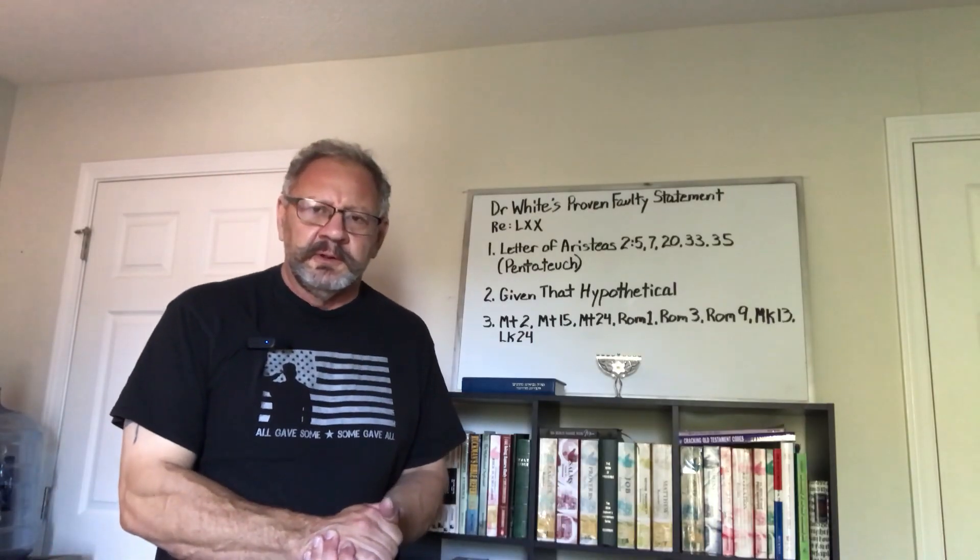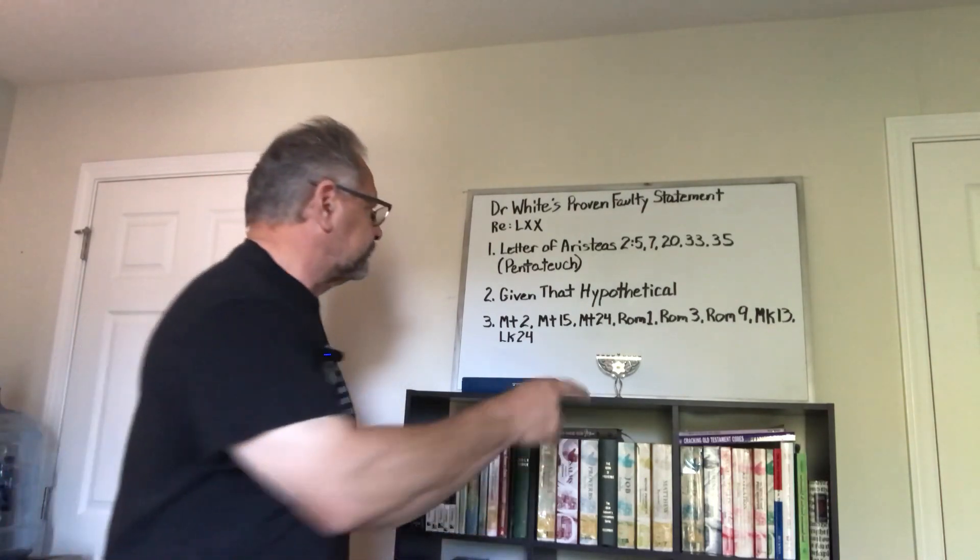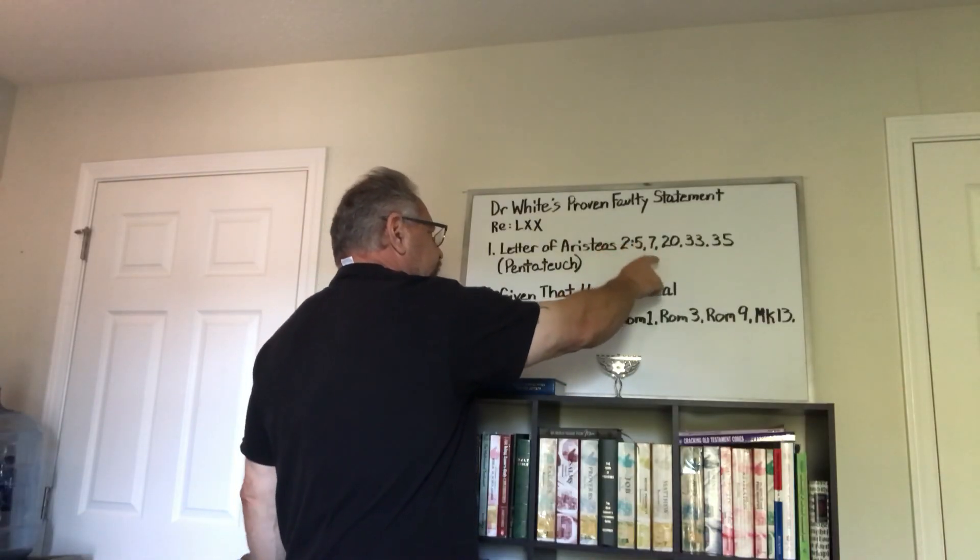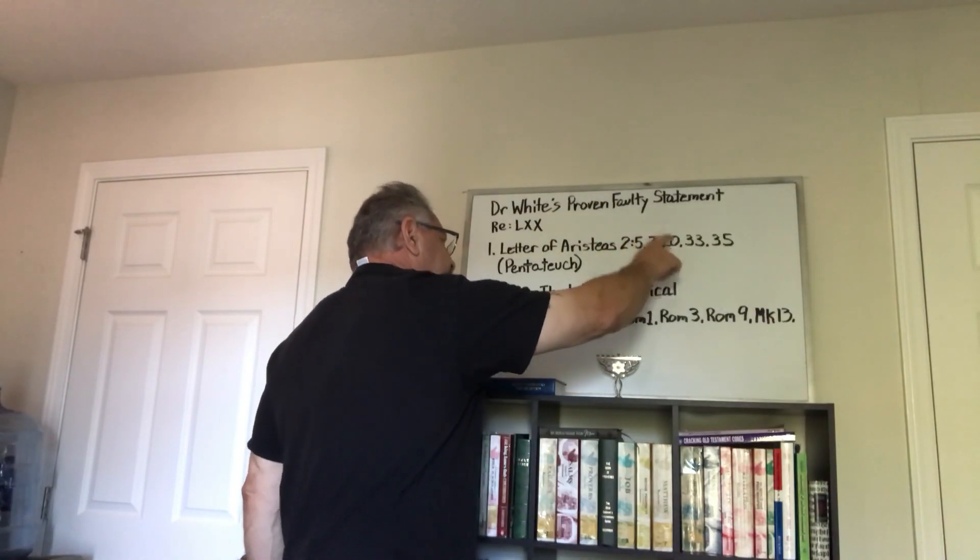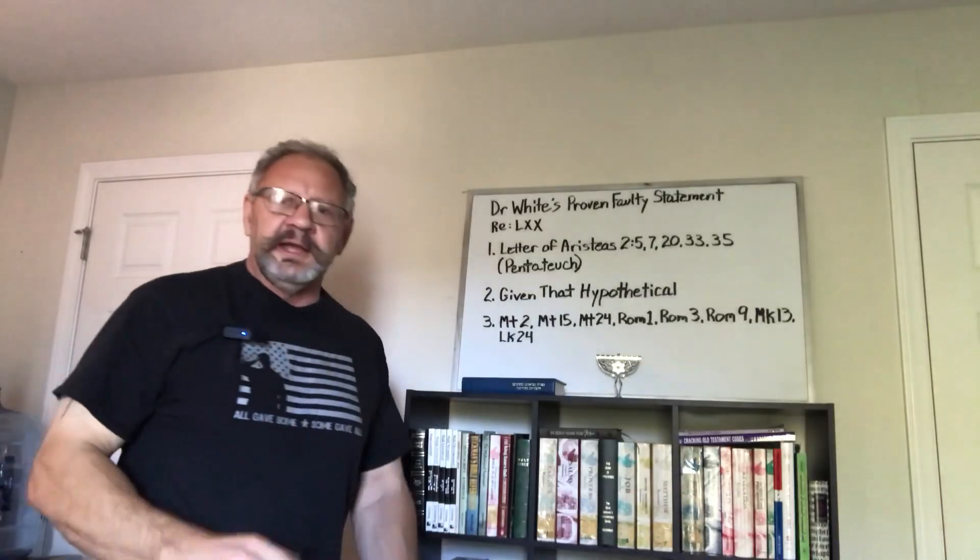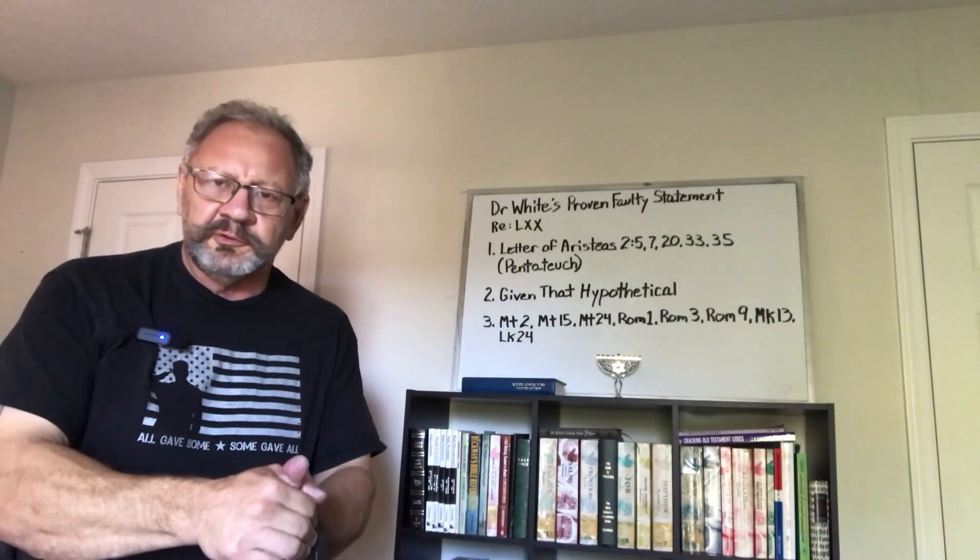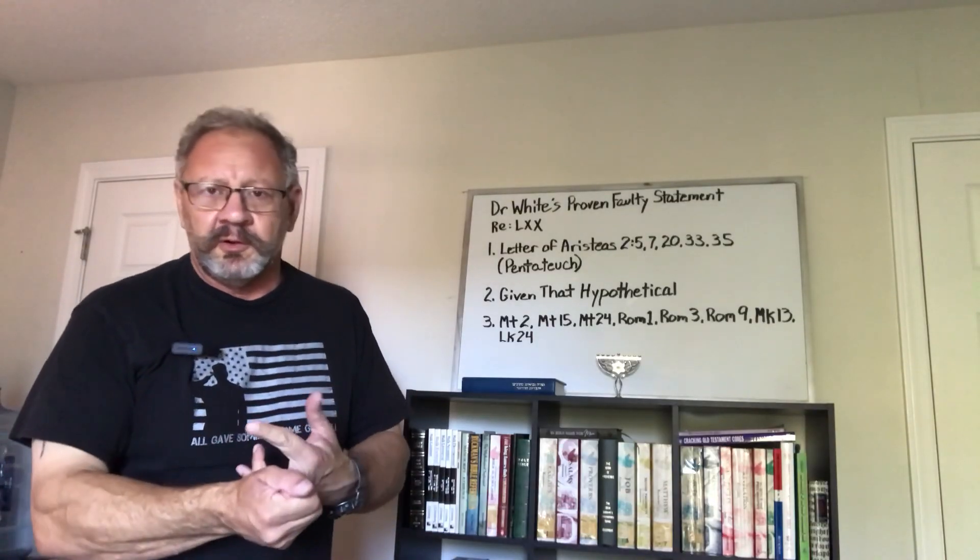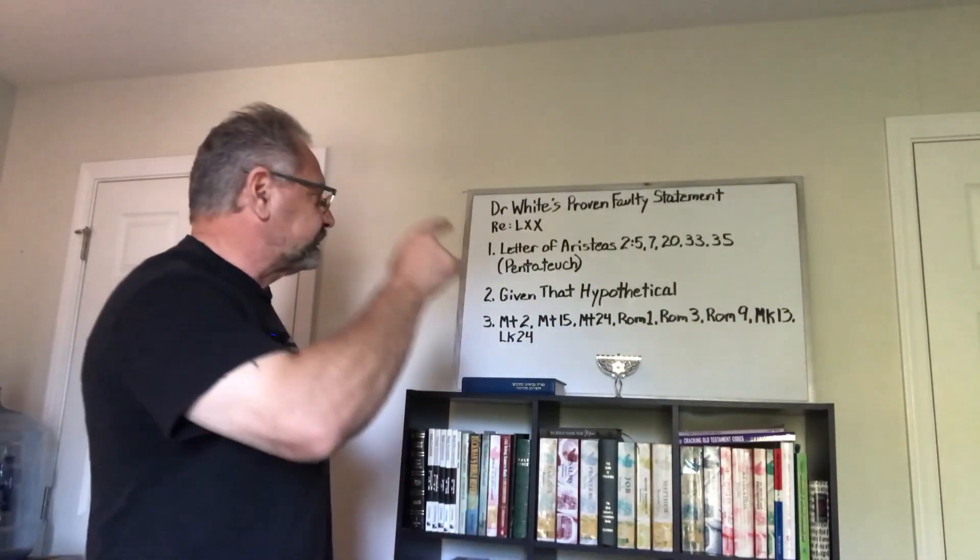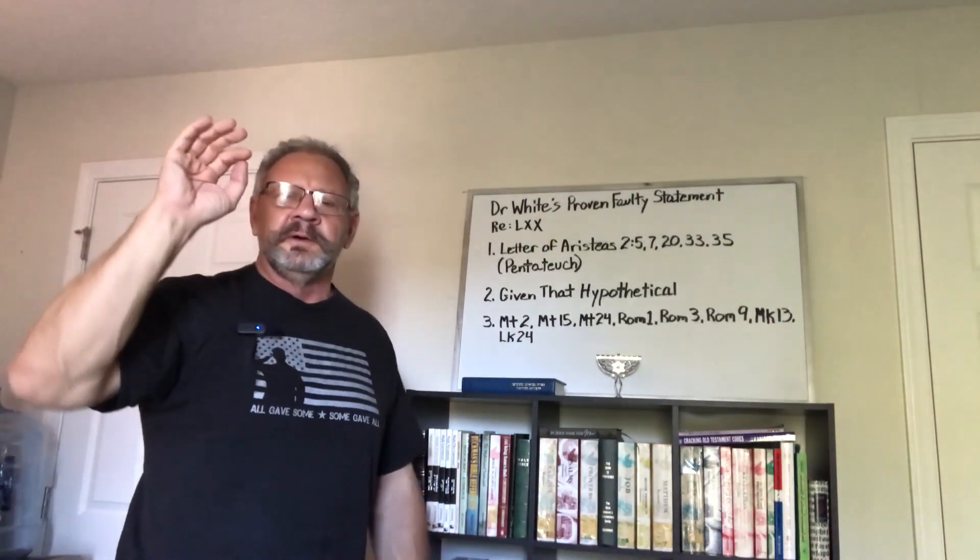Well, the Letter of Aristeas itself clearly tells us in scores of places: chapter 2 verse 5, chapter 2 verse 7, chapter 2 verse 20, chapter 2 verse 33, chapter 2 verse 35, that only the Pentateuch, the Pentateuch, the law of the Jews, their law, this law, the holy law, is all a reference—check the references yourself—to the first five books of Moses.